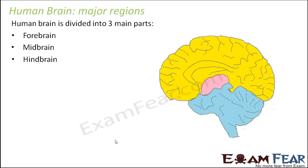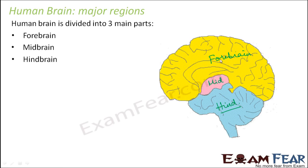In this structure of the brain, you can see this is the forebrain, this is the midbrain, and this is the hindbrain. We will talk about the detail of the forebrain, midbrain, and hindbrain in the next few slides.